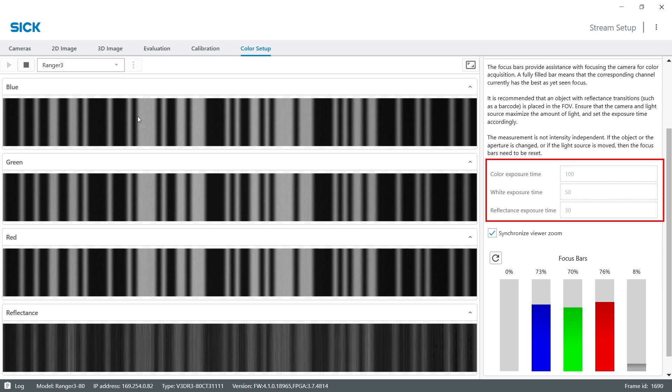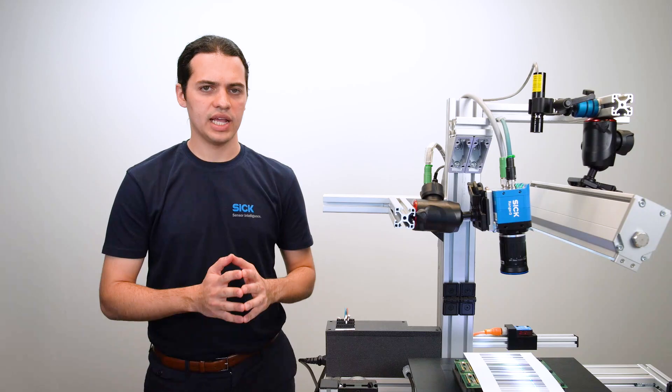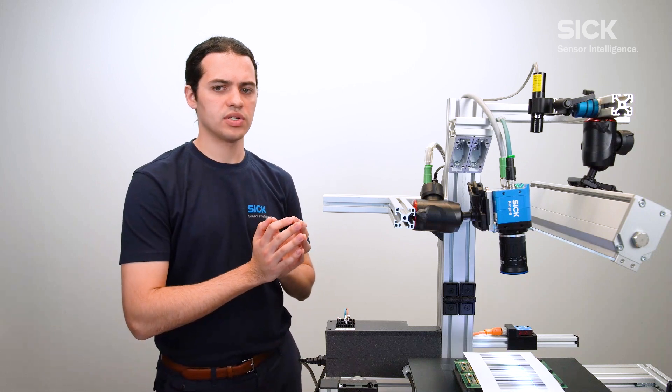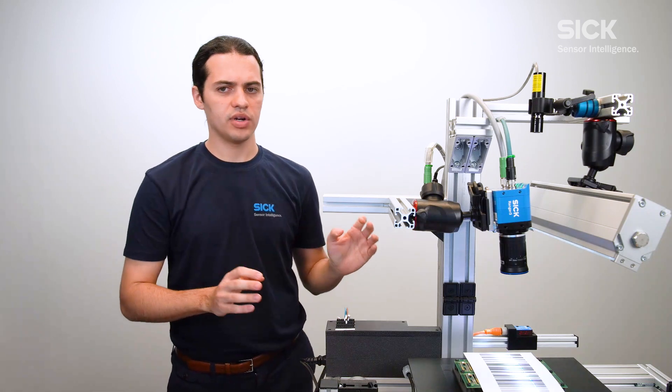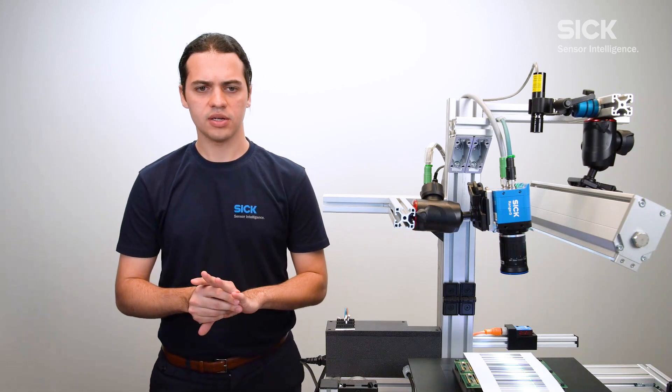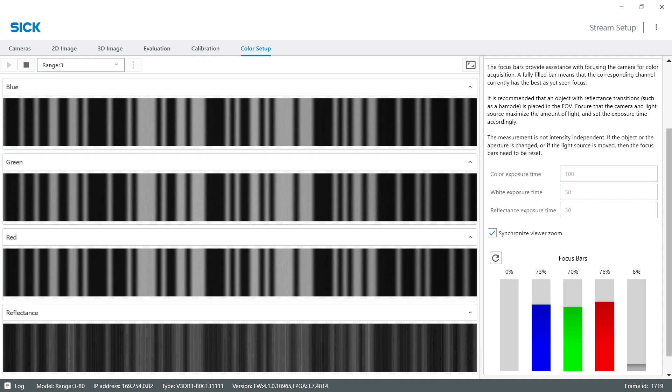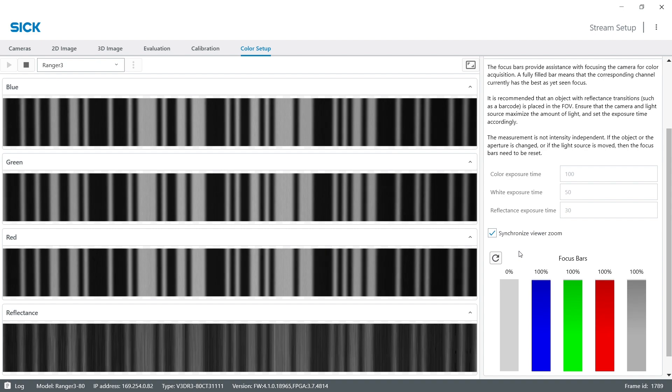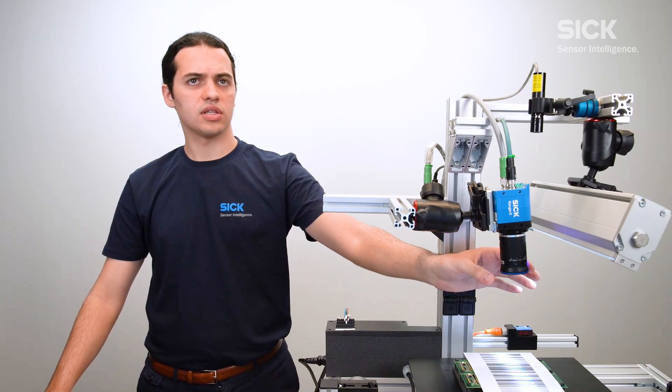You can change the exposure time on the color rows if necessary, but now it is good. We can then position and angle the light so that it illuminates the high-resolution lines uniformly. Right now it does that already so we skip that. And finally, fix the focus of the lens with help of the focus bars. Reset it first and then adjust the focus of the lens.